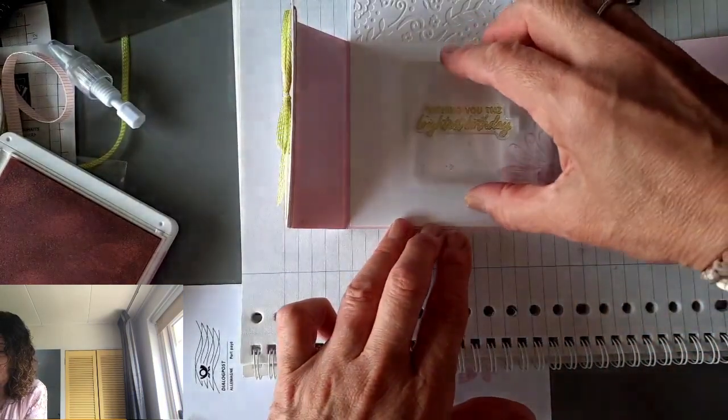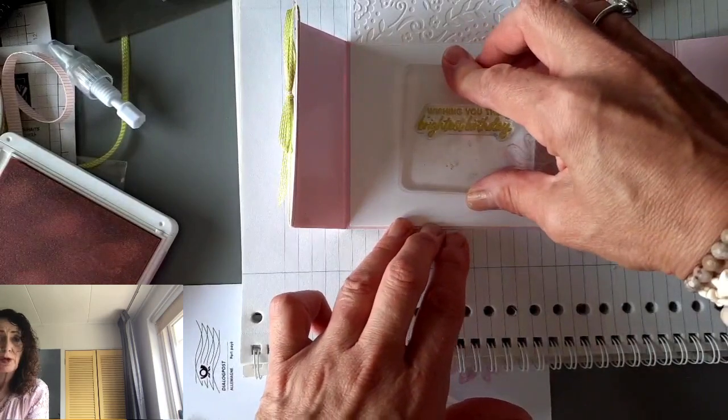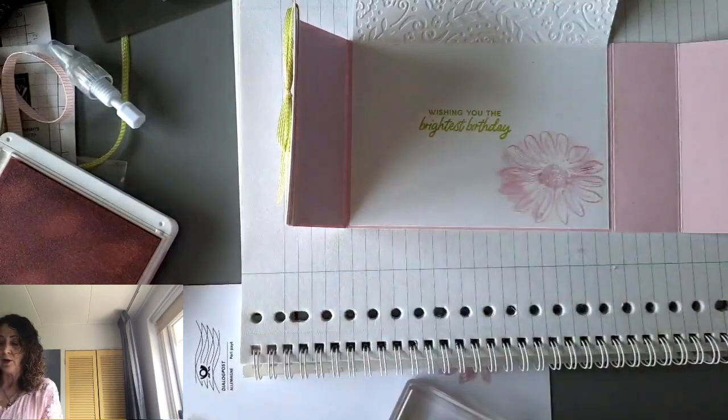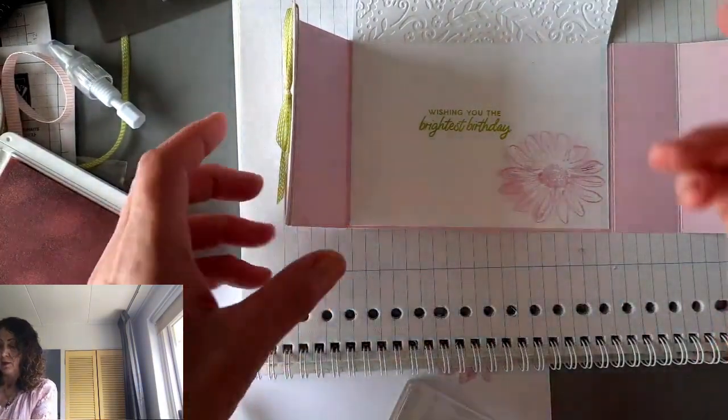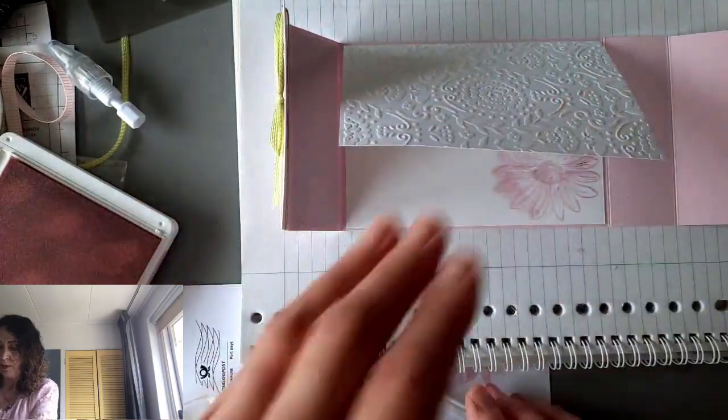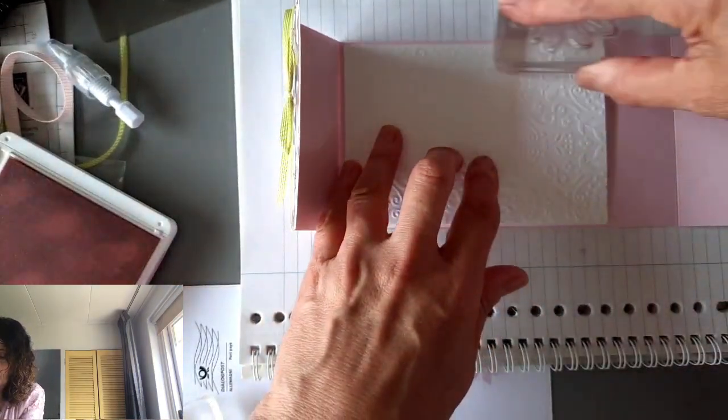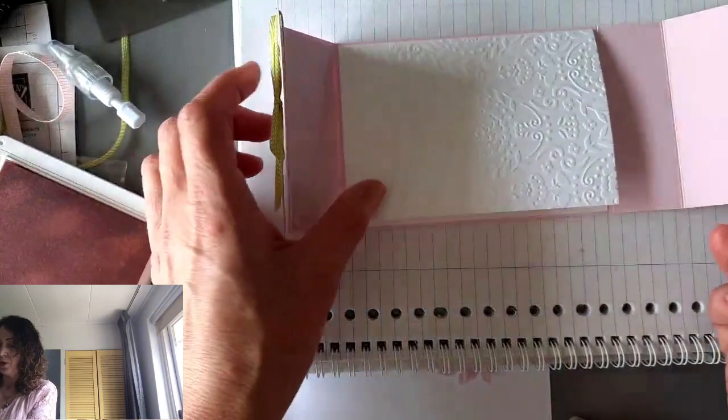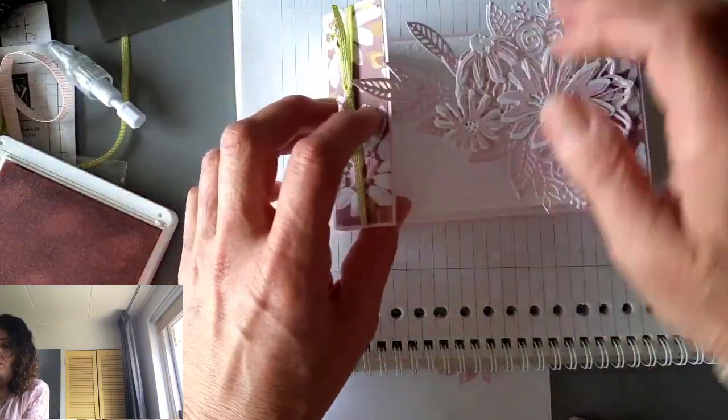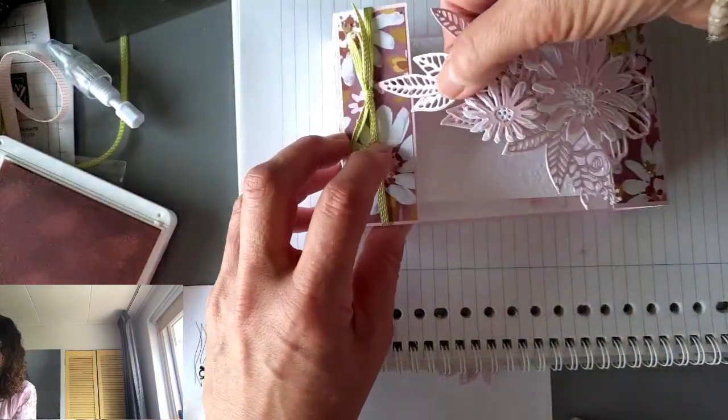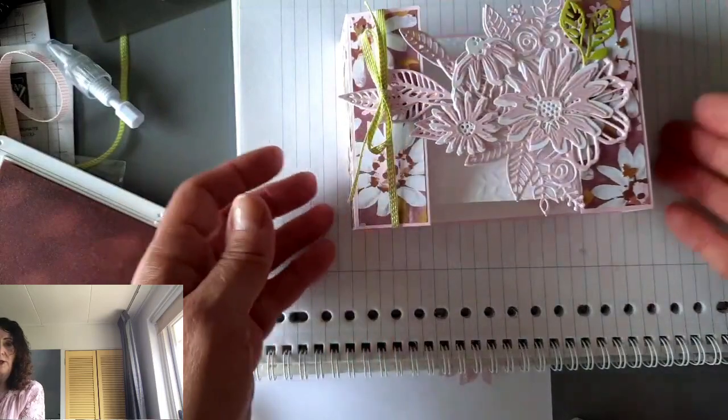We'll close that up. And I'm just going to give it a little hole. And here we go. We tuck in those leaves. And we have a nice box card. Isn't it pretty?